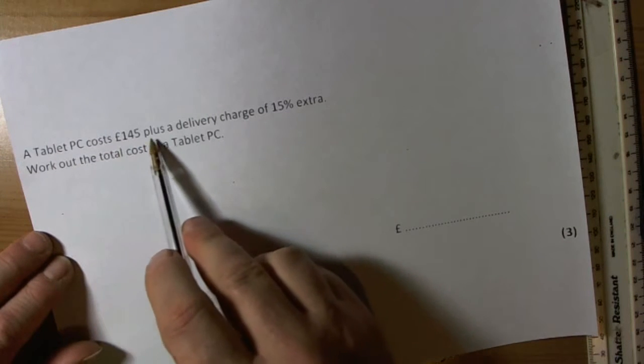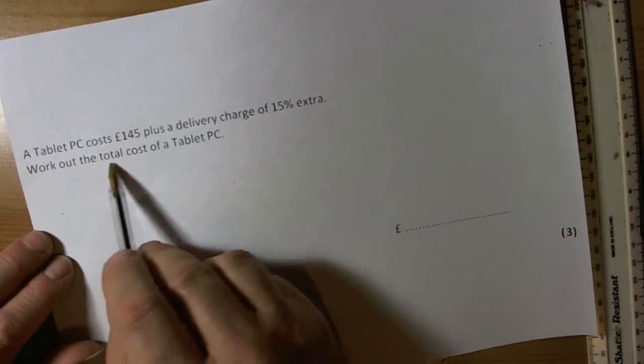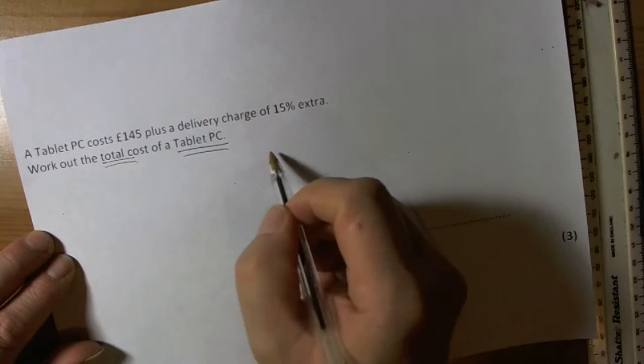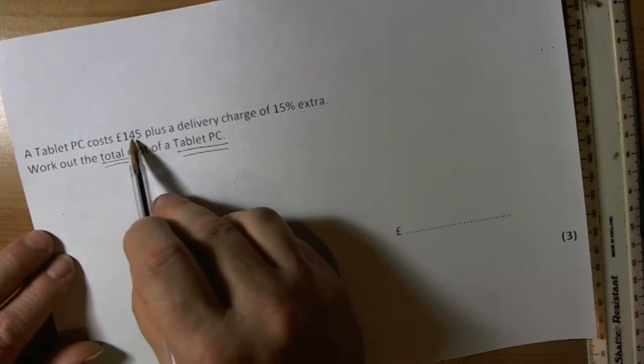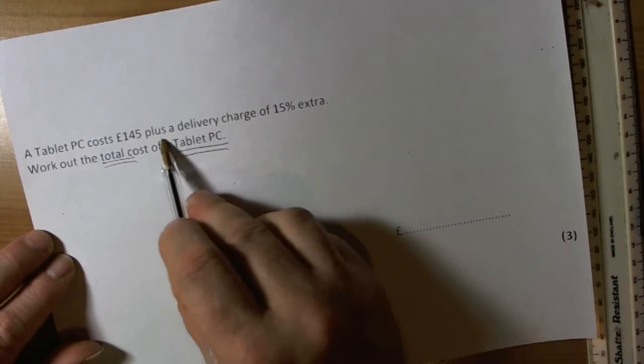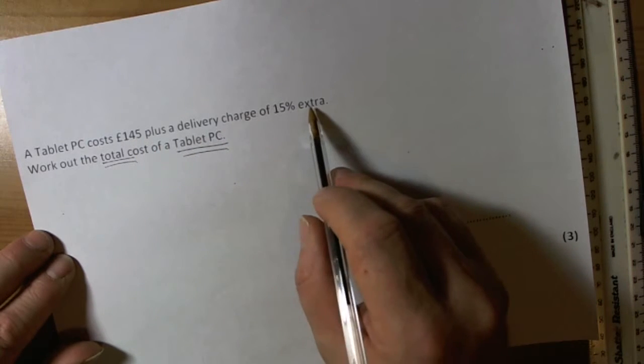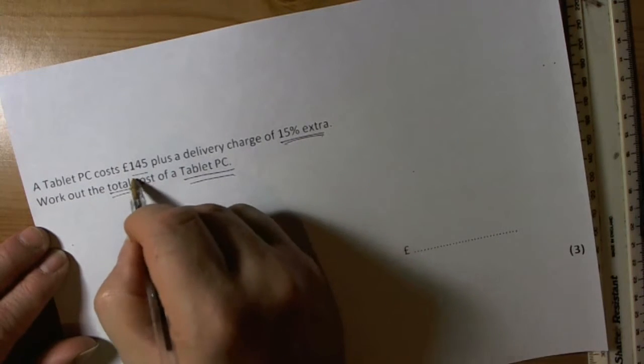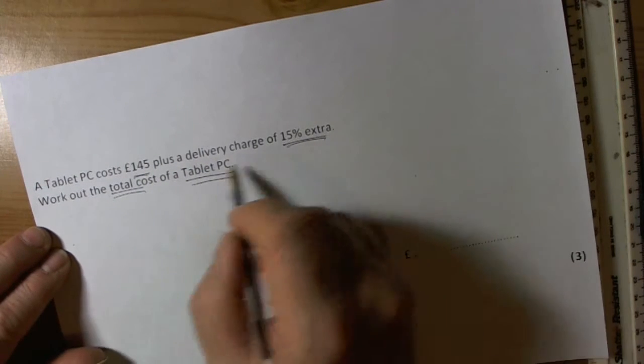This question is asking us to work out the total cost of a tablet PC. It costs £145 plus a delivery charge of 15% extra. In other words, we've got to add on 15% of £145 to work out the total cost.